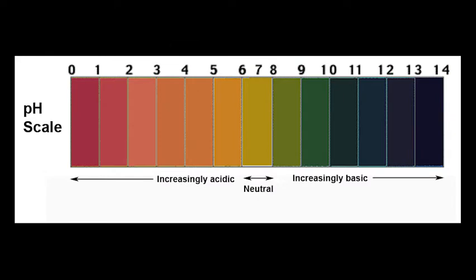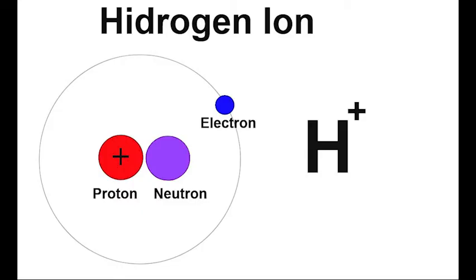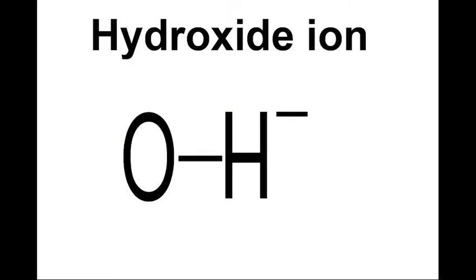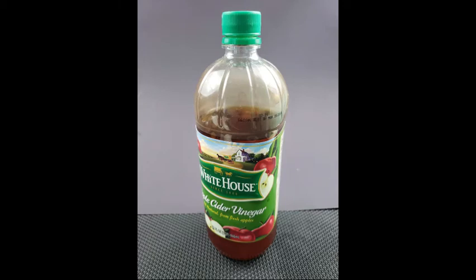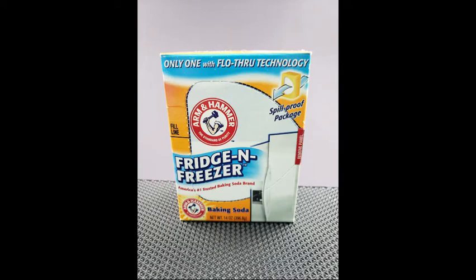The pH scale ranges from 0 to 14 and indicates the extent to which substances are acidic, basic, or alkaline. Acids have a high concentration of hydrogen ions and a low concentration of hydroxide ions. A neutral substance such as pure water has a pH of 7. An acidic substance like vinegar has a pH of less than 7. A basic or alkaline substance such as baking soda has a pH greater than 7.